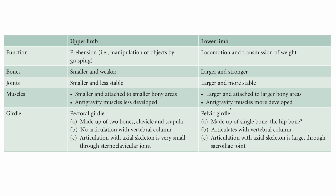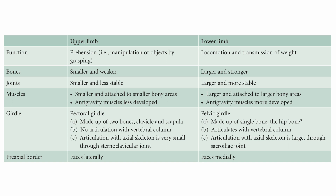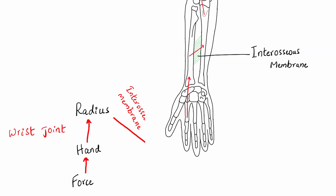The girdle of the upper limb is the pectoral girdle, made up of two bones — the scapula and clavicle — with no articulation with the vertebral column; articulation with the axial skeleton is only through the small sternoclavicular joint. The pelvic girdle of the lower limb is made up of a single bone called the hip bone and articulates with the vertebral column through the large sacroiliac joint. The pre-axial border of the upper limb faces laterally, whereas the pre-axial border of the lower limb faces medially.